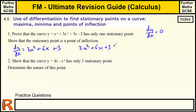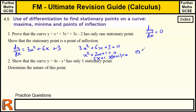Factorising x squared plus 2x plus 1 gives (x + 1)(x + 1), which tells us x equals minus 1 only. So there's only one stationary point because these are repeated roots — x equals minus 1 is the only point that makes the derivative zero. Then we need to show this stationary point is a point of inflection.